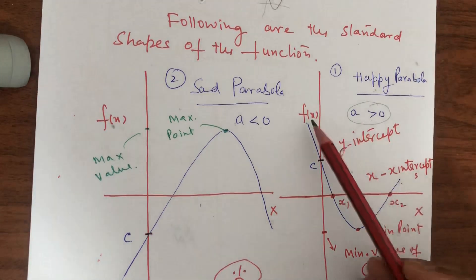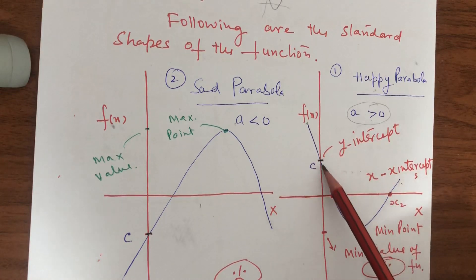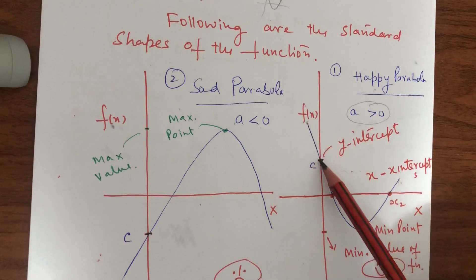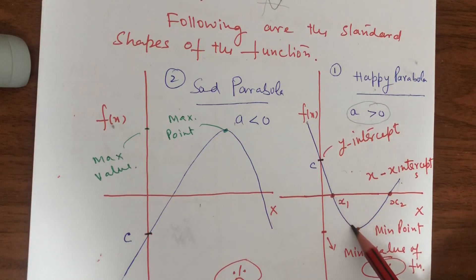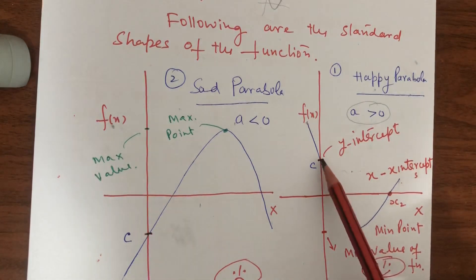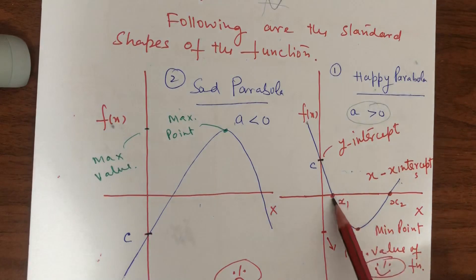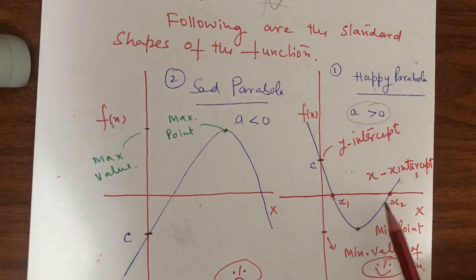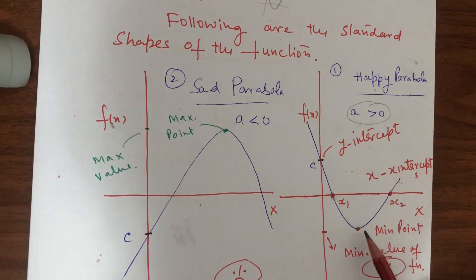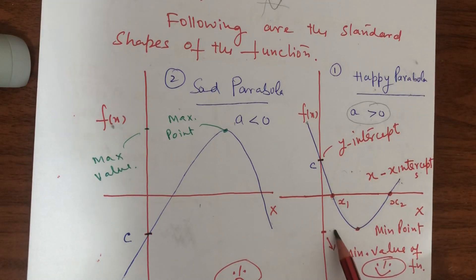The happy parabola starts from some point, cuts the y-axis at point c, then cuts the x-axis at two points, goes down to a minimum point, and then moves back up cutting the x-axis again. The point where it cuts the y-axis is the y-intercept, the two points where it cuts the x-axis are the x-intercepts, and the lowest point is called the minimum point. The corresponding y-axis value at that point is the minimum value of the function.